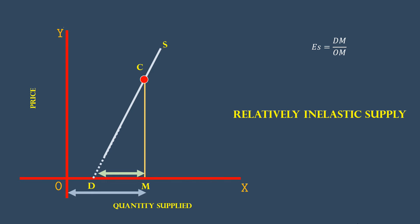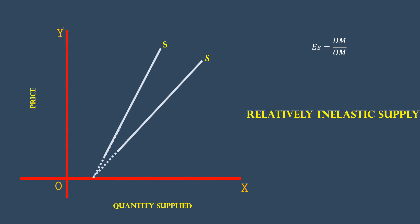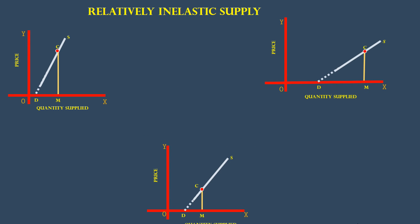Students shall keep this in mind. Whatever be the slope of the supply curve, if its lower segment, when extended, passes through the X-axis, the supply is relatively inelastic. Look at these diagrams. The supply curves have different slopes, but DM is less than OM. In all the cases, these supply curves represent relatively inelastic.